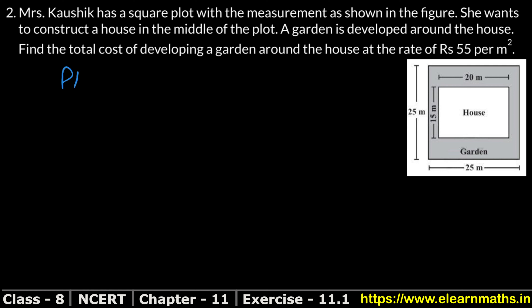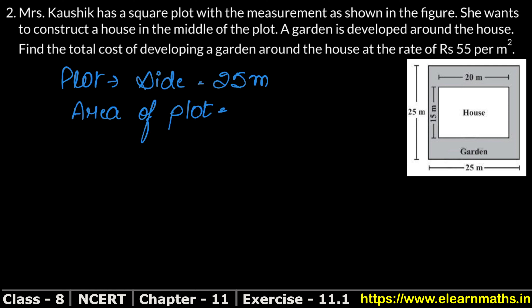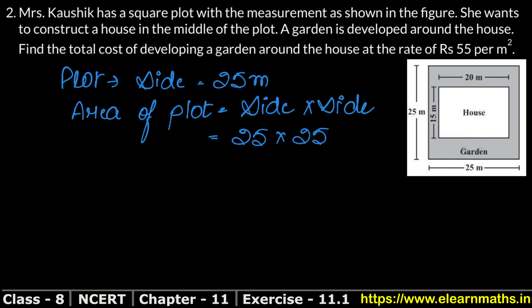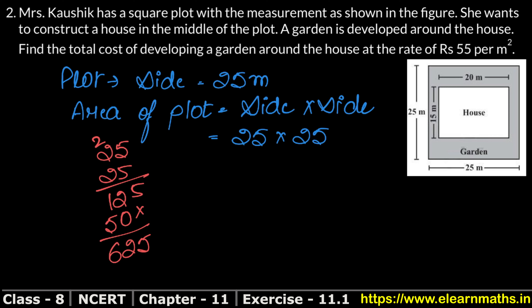First, let's talk about the plot. The plot is square and its side is 25 meters. The area of the plot is side × side, which is 25 × 25. Calculating: 25 × 25 equals 625.